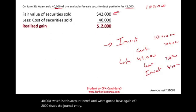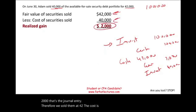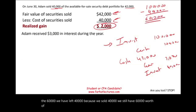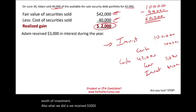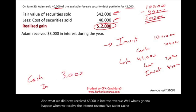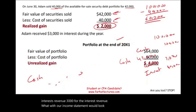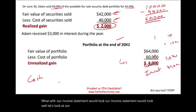After selling $40,000, we still have $60,000 worth of investment remaining. Additionally, the company received $3,000 in interest revenue. The journal entry: debit Cash $3,000, credit Interest Revenue $3,000. Now let's look at what the income statement and portfolio would look like at year-end.